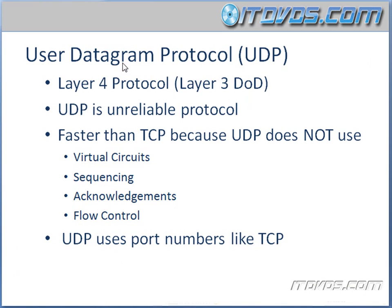The User Datagram Protocol is a Layer 4 protocol of the OSI model. It runs on the transport layer — Layer 3 for the DOD model, which is the host-to-host layer.